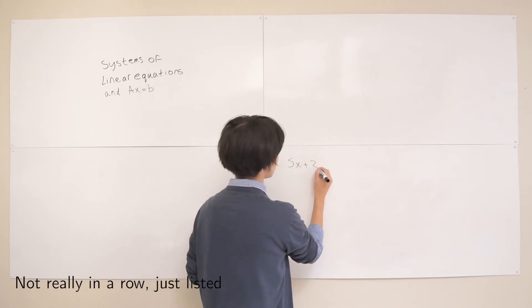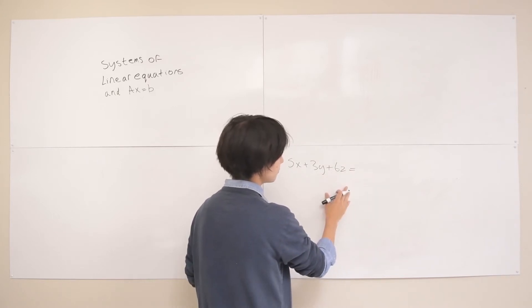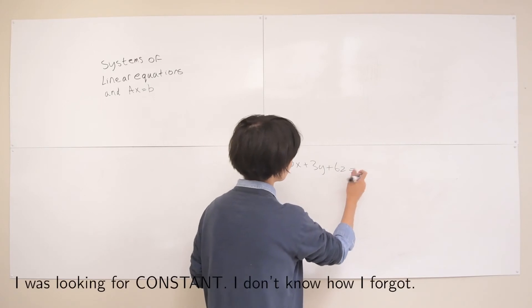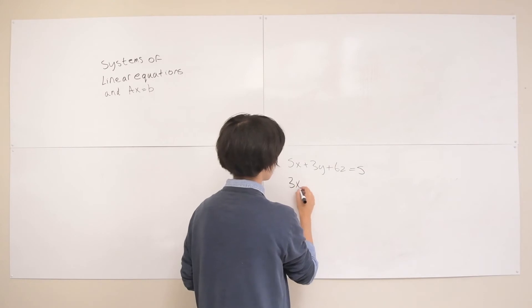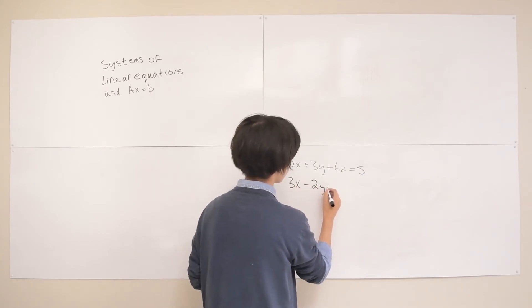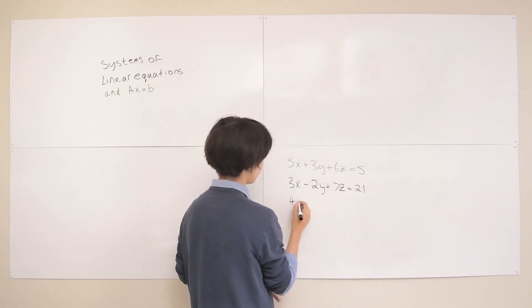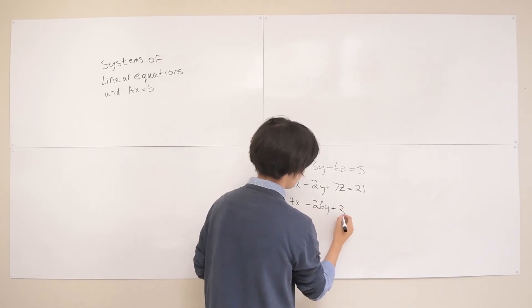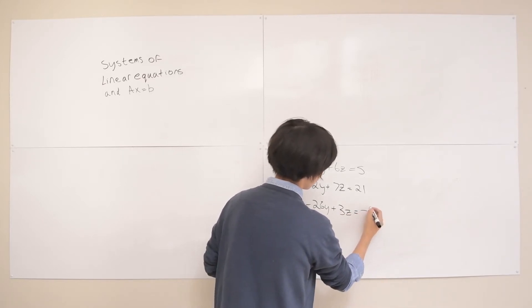So 5x plus 3y plus 6z, let's move the scalar term the non-variable term to the other side equals 5. 3x minus 2y plus 7z equals 21, and I'll say 4x minus 26y plus 3z equals minus 48.